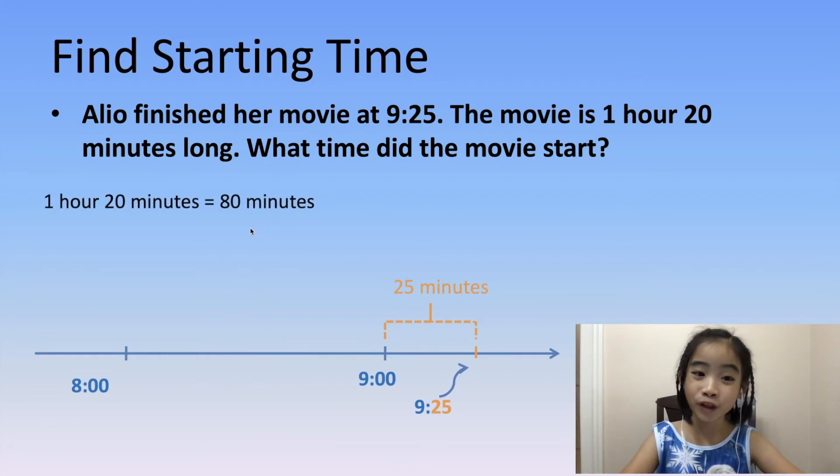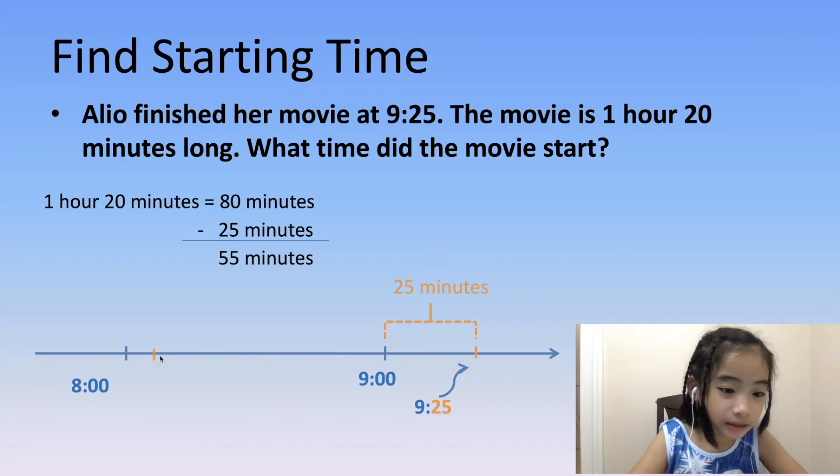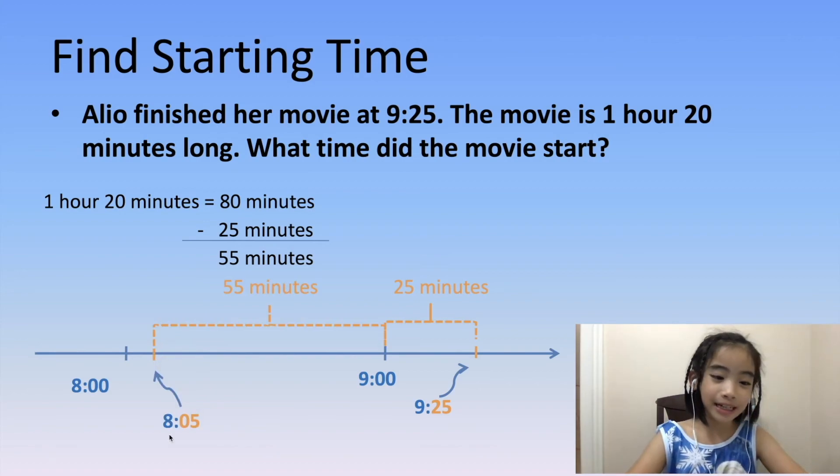We can convert that to 80 minutes. Now, let's subtract the 25 minutes. 80 minus 25 equals 55 minutes. 55 minutes from 9 o'clock is this little mark over here, which is 8:05. So the movie started at 8:05.